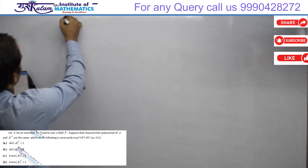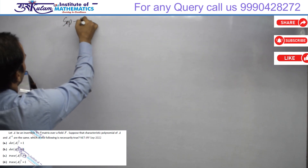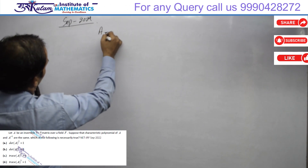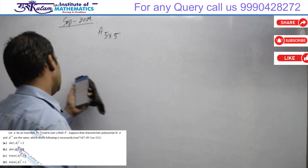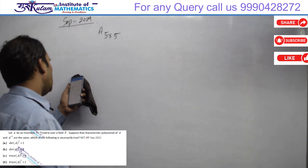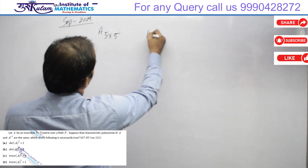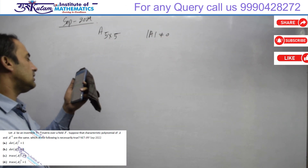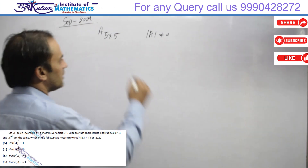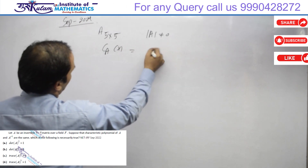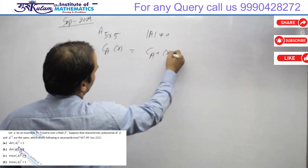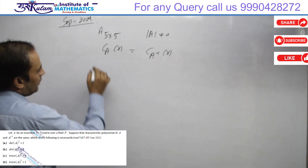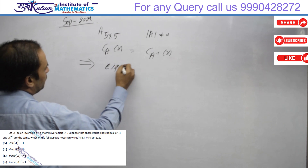This question is from September 2022 NET JRF. A 5×5 matrix is given with entries from a field F. It is an invertible matrix, so determinant of A is non-zero. It is given that the characteristic polynomial of A and characteristic polynomial of A inverse are the same, i.e., characteristic polynomial of A equals characteristic polynomial of A inverse. This implies the eigenvalues of A and A inverse are the same.